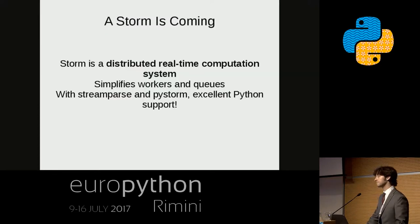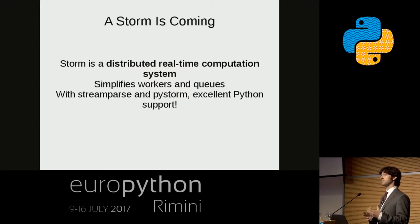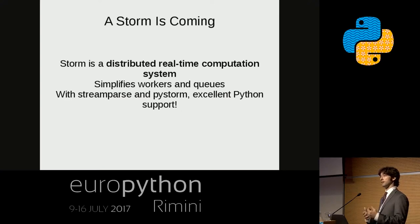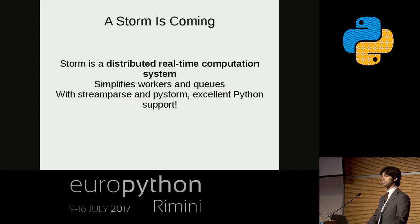But we found Storm. Storm is fantastic — it's a distributed real-time computation system that simplifies the whole worker-and-queue business. Thanks to Parsely's work with StreamParse and PyStorm, we have a completely native interface to Storm that lets you write your code and deploy it to a cluster without having to write a single line of Clojure, Java, or anything you don't want to write.